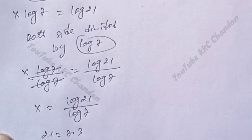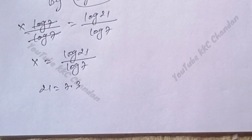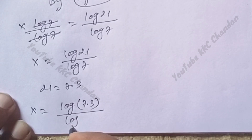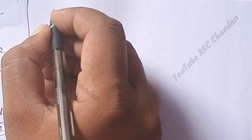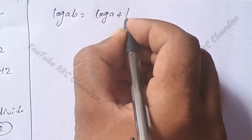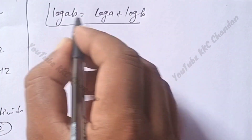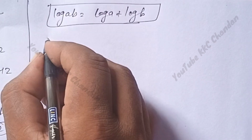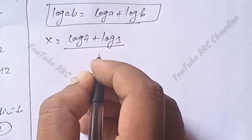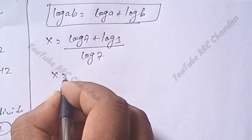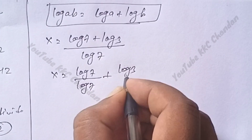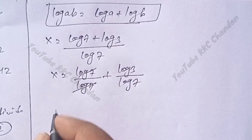Now 21 can be written as 7 into 3, so x equals log(7 into 3) divided by log 7. We know that log(a·b) equals log a plus log b. Applying this rule, x equals (log 7 plus log 3) divided by log 7, which gives x equals log 7 divided by log 7 plus log 3 divided by log 7.